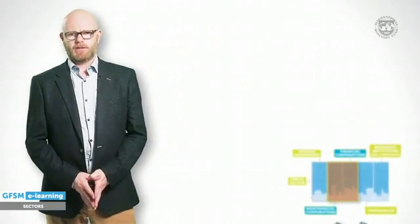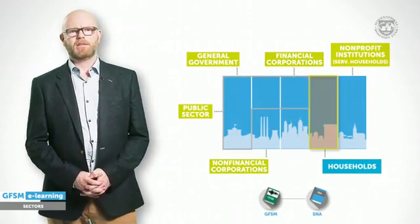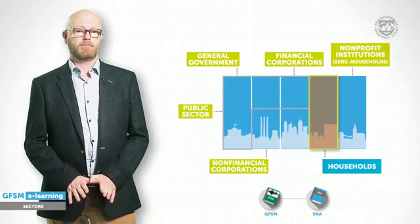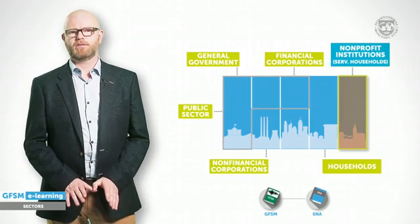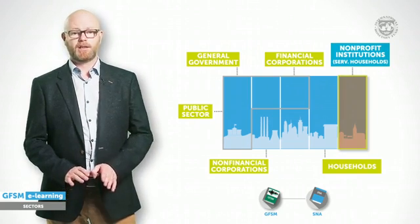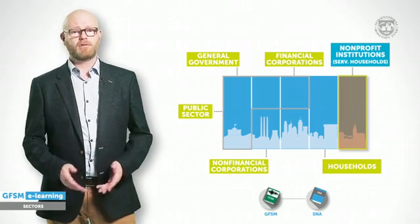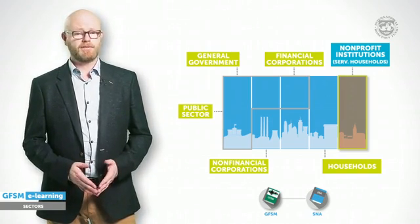Two other sectors complete this presentation. The household sector comprises all physical persons and includes the self-employed. Finally, there is a typically small sector that consists of non-profit institutions that serve households, and includes professional societies, trade unions, charities and philanthropic relief agencies. These five sectors should be defined consistently for all macroeconomic statistics to ensure that data and concepts can be used across the different frameworks, such as the national accounts, government finance statistics, the balance of payments, or monetary and financial statistics.